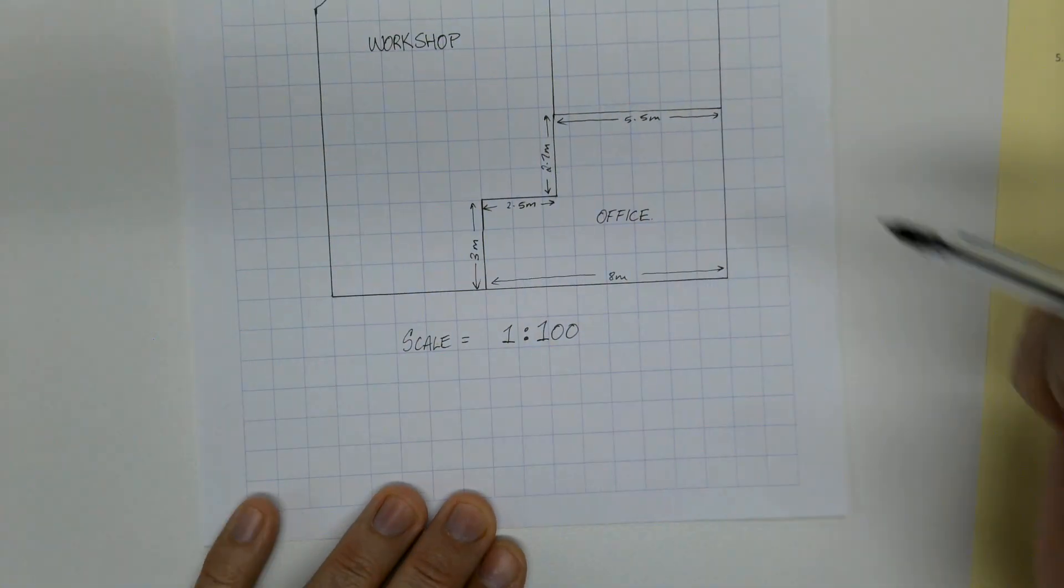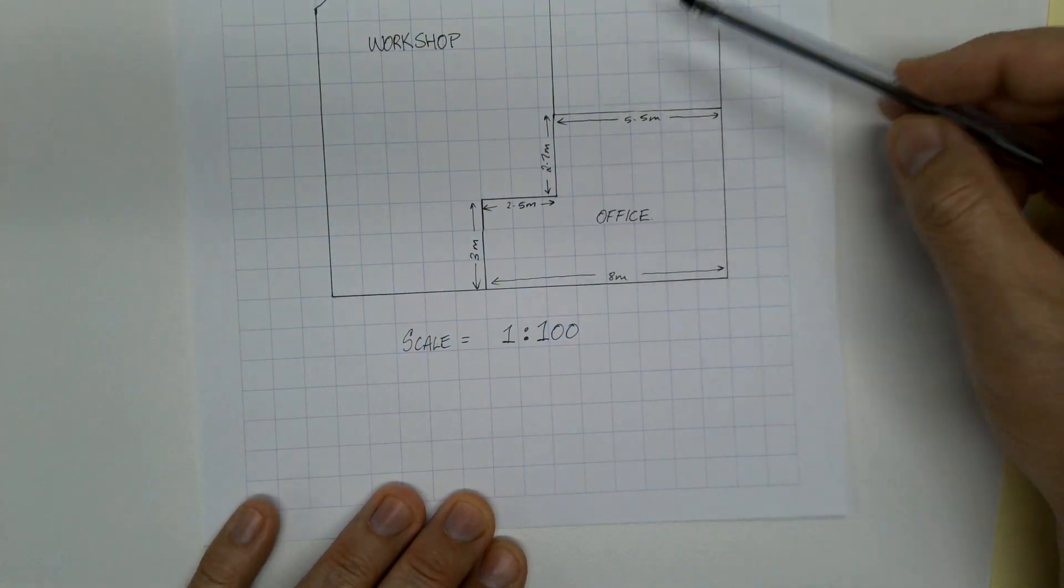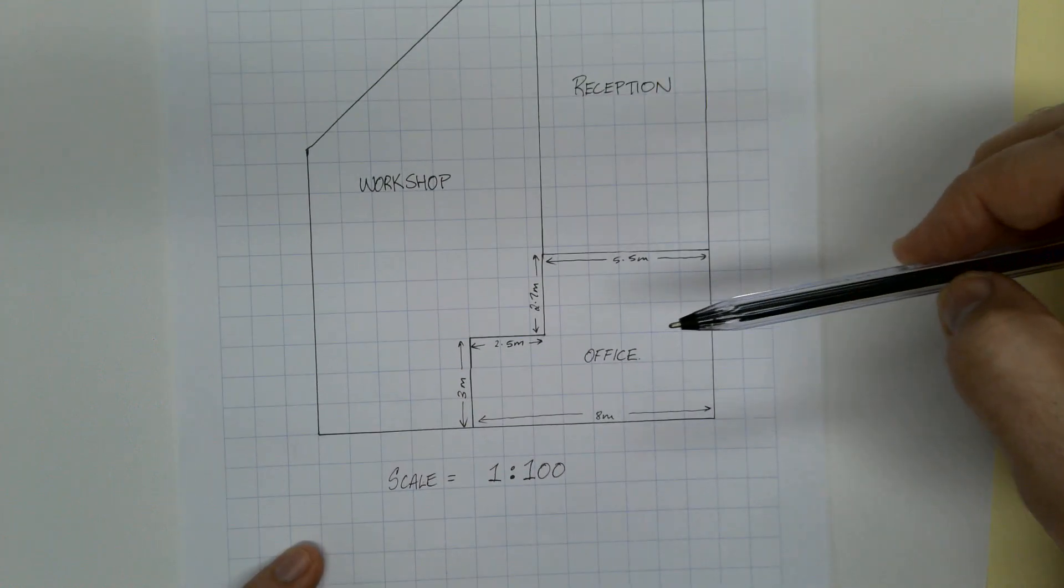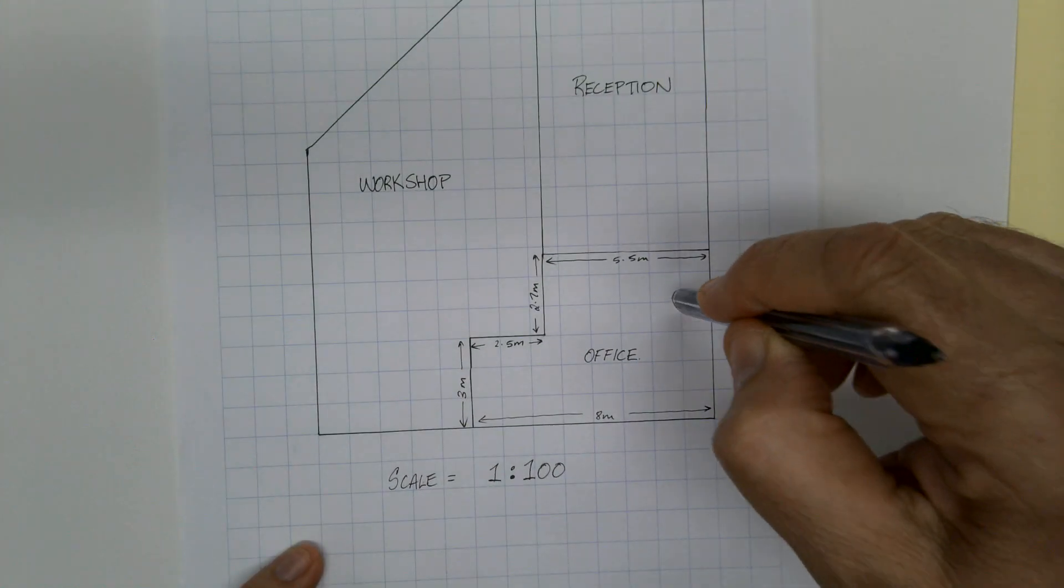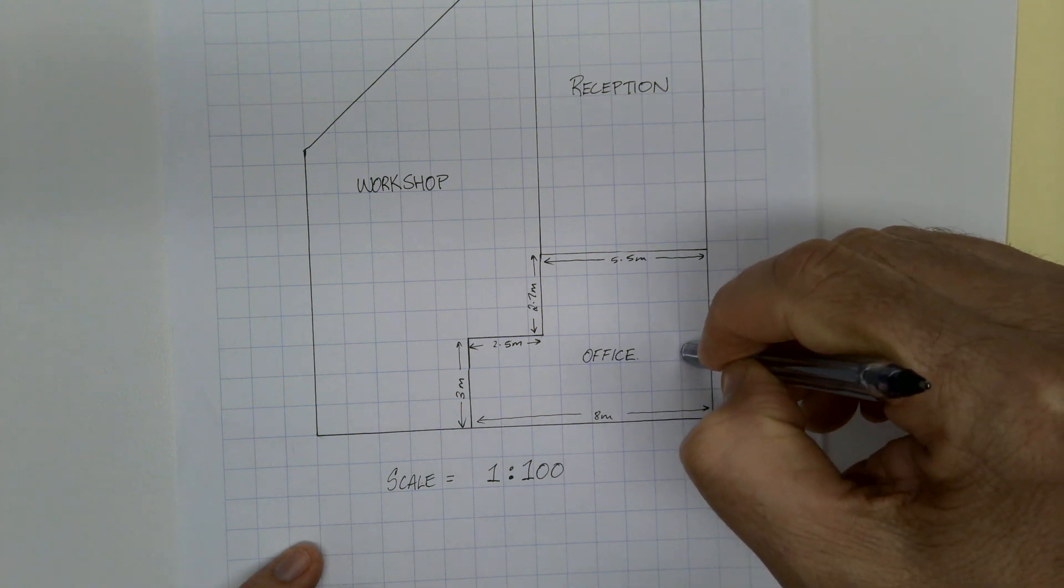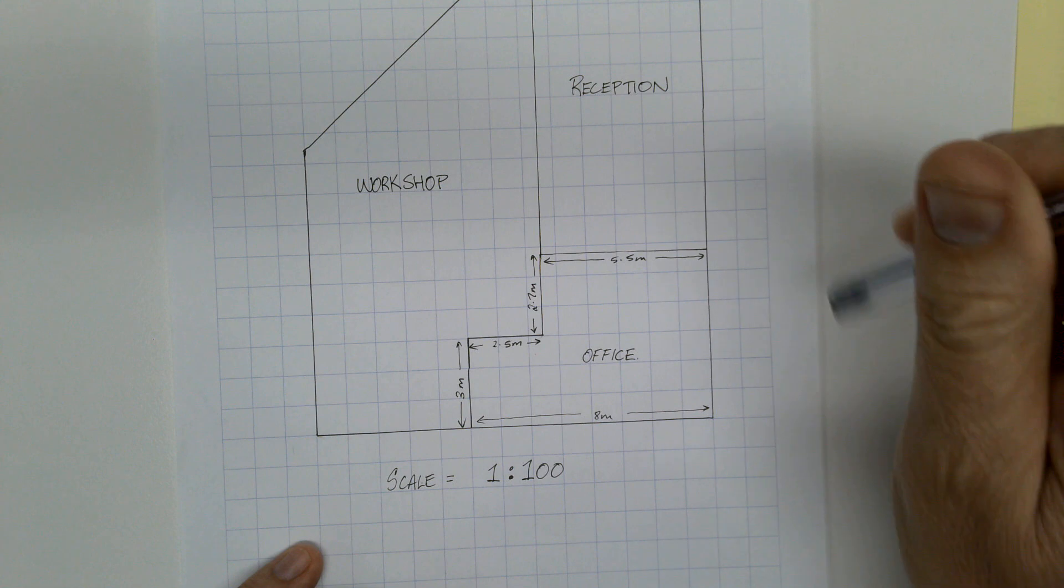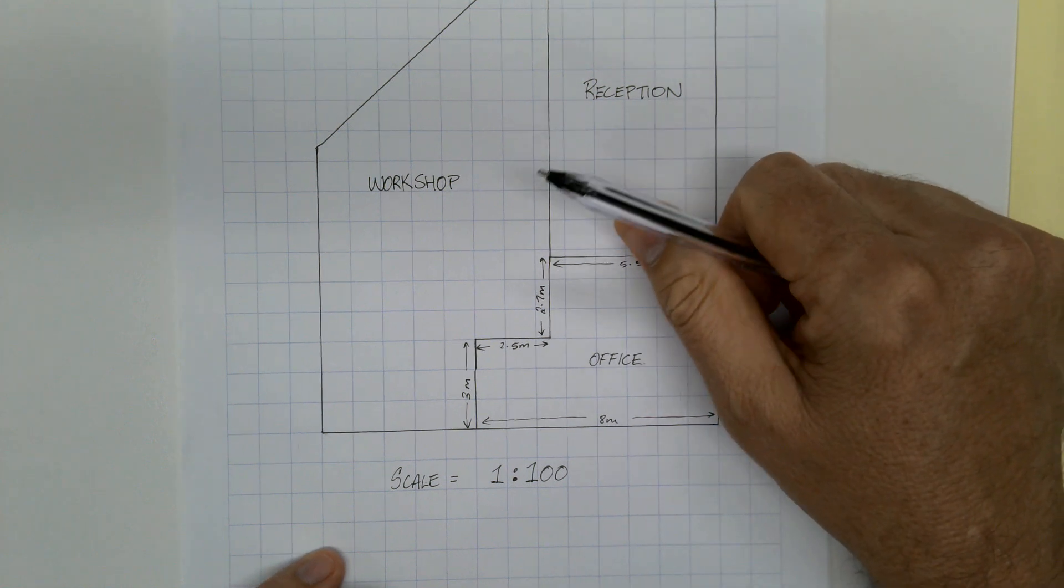That is what you've got to do for the assignment. Pick a small space, a reception area or an office would be my advice. You've got to go and do the total area, get the flooring costs, get the area of the walls, get the total painting costs. Off to it.